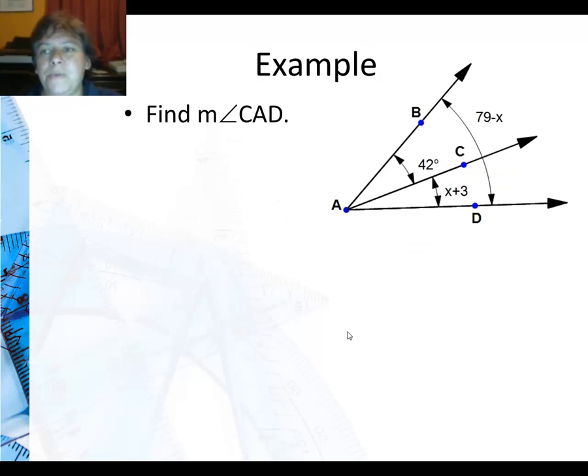So here is an example for you. We are going to find the measure of angle CAD. Now how can I tell that this is the angle addition postulate? Well, you can see I have a piece here with an expression, and I have that piece, and then I have this is the whole angle. So I have the pieces and the whole. So there is that piece, that piece, and the whole. So I am going to set up an equation by adding 42 to x plus 3 equals 79 minus x.